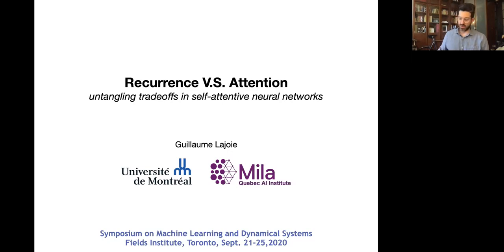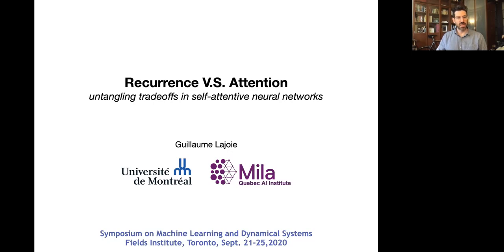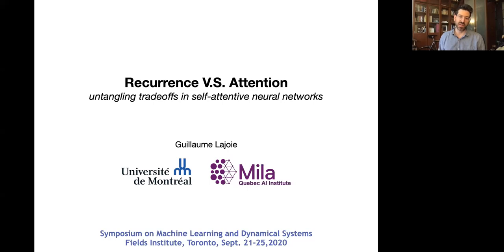Hi, my name is Guillaume Lajoie. I'm a professor at the Department of Mathematics and Statistics at the University of Montreal and a core member of MILA, the Quebec AI Institute. It's my pleasure today to talk to you about some recent research concerning recurrence and attention in artificial networks. It's a pleasure to be contributing to this symposium on machine learning and dynamical systems hosted by the Fields Institute.